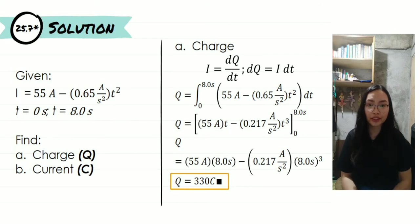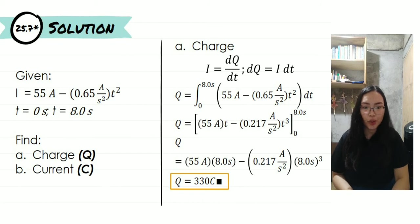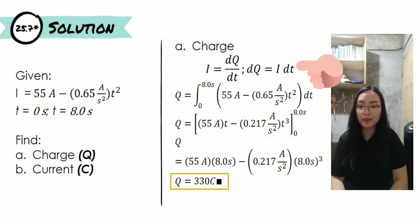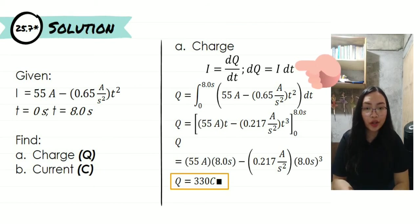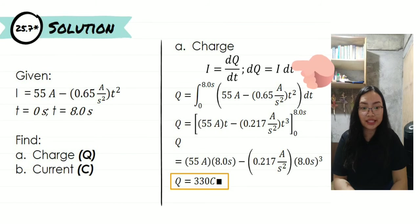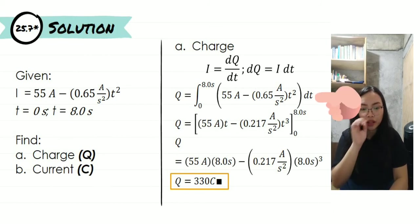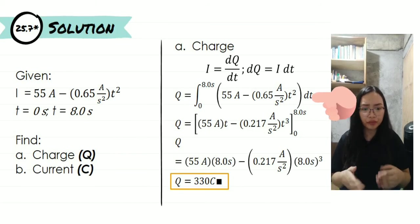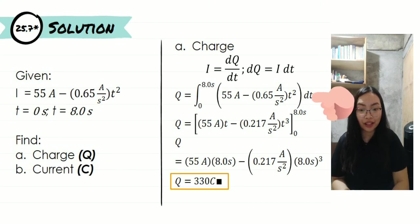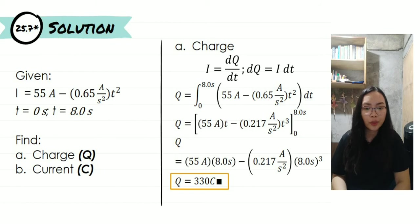We are asked to find the charge and the current. In order to solve for the charge, we need to use the equation I is equal to DQ over DT. Since we are dealing with a calculus-based problem, we need to alter the equation. Since we are looking for the charge, we manipulate it so that DQ is equal to I multiplied by DT. To get the charge, we find the integral of the current multiplied by the derivative of time, with upper boundary 8 seconds and lower boundary 0 seconds. By substituting the values and performing all the operations, we will have a charge equal to 330 coulombs.